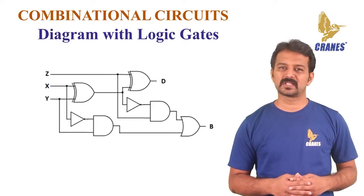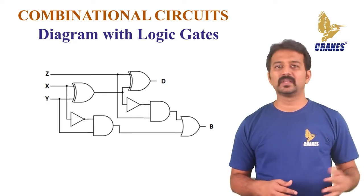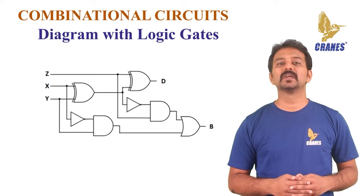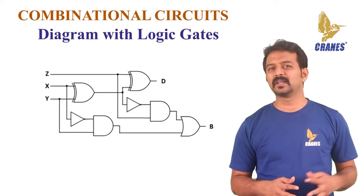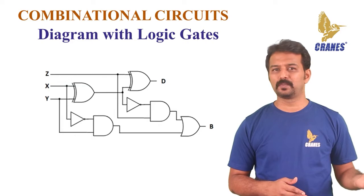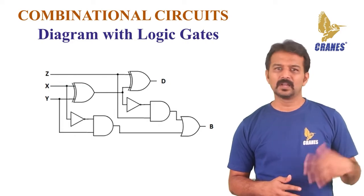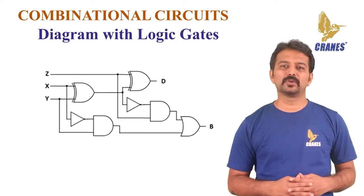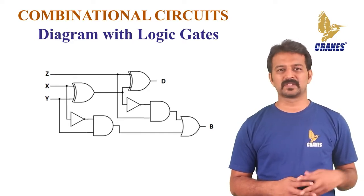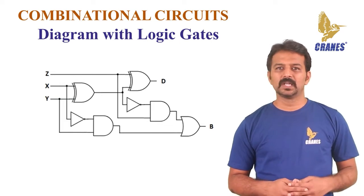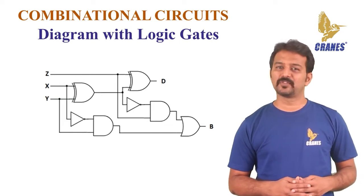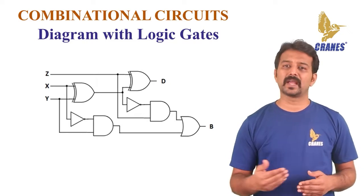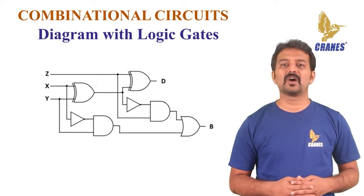The final output of this subtractor is the difference output. The borrow out of both the half subtractor circuits is connected to an OR logic gate, rather than giving out OR logic for two output bits of the subtractor, we get the final borrow out of the subtractor. The last borrow out signifies the MSB, which is nothing but the most significant bit. If we observe the internal circuit of the full subtractor, we can see two half subtractors with a NAND gate and an XOR gate with an extra OR gate.